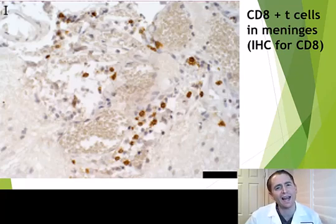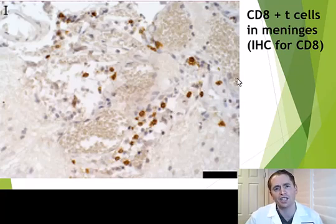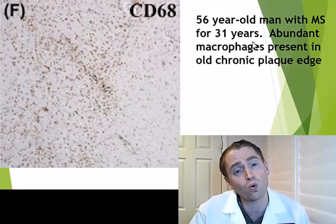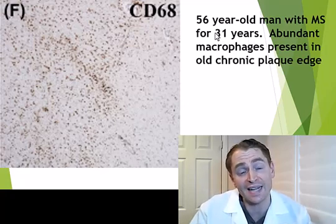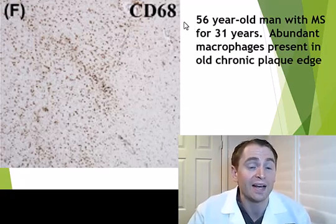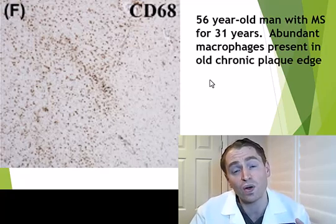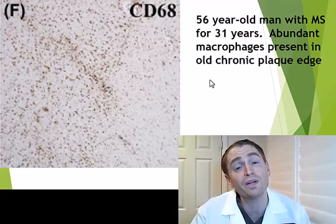This is specifically a CD8 immunohistochemistry stain for cytotoxic T cells, and you can see they're abundant in the meninges of active lesions of MS. Helper or CD4 positive T cells are also present. But we're talking about active lesions — active inflammation. We're not going to see these types of white blood cells in older people with progressive MS, with longstanding stable scars, no change on MRI, no relapses for many years — or are we? This is a slide from a 56-year-old man with MS for 31 years, an old, stable, chronic plaque. Yet with this CD68 stain, there are abundant macrophages and microglia. We think this may contribute to a slow, insidious, smoldering inflammation causing ongoing damage, even in stable chronic plaques that could be driving progressive MS.